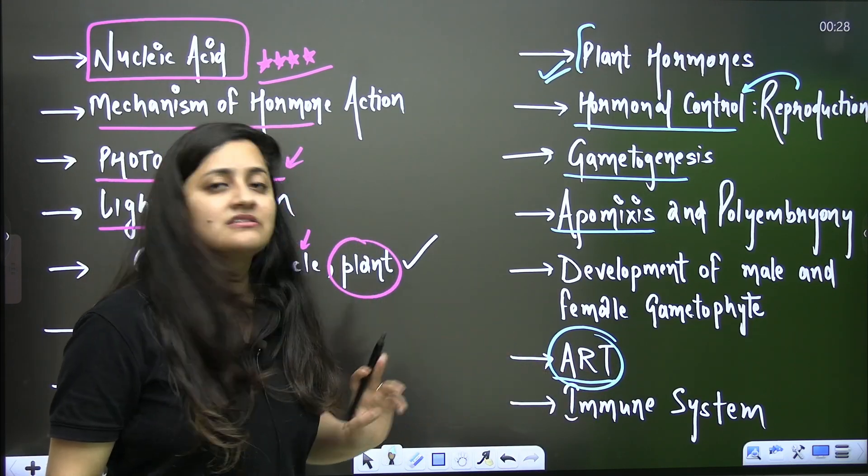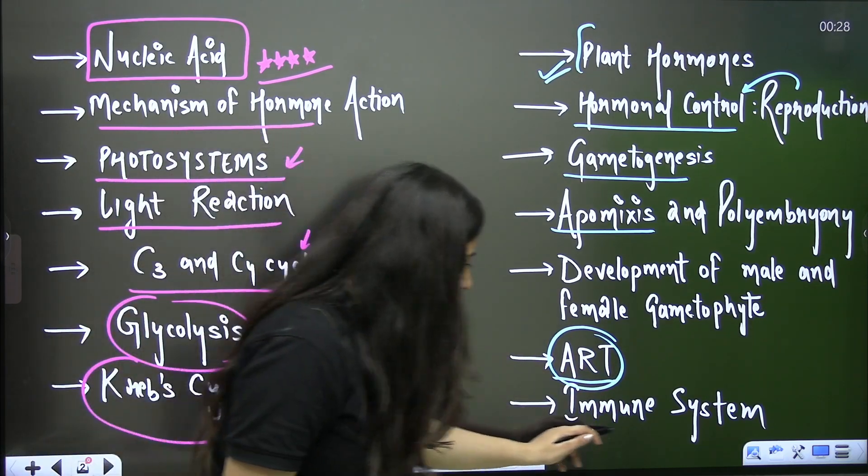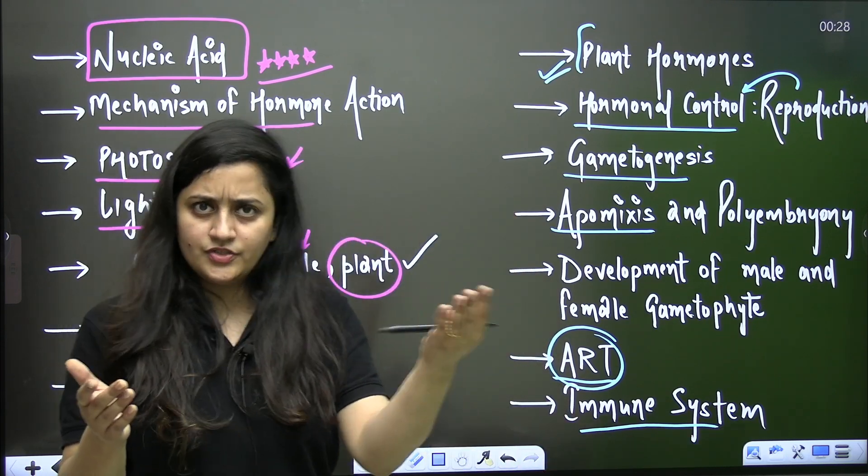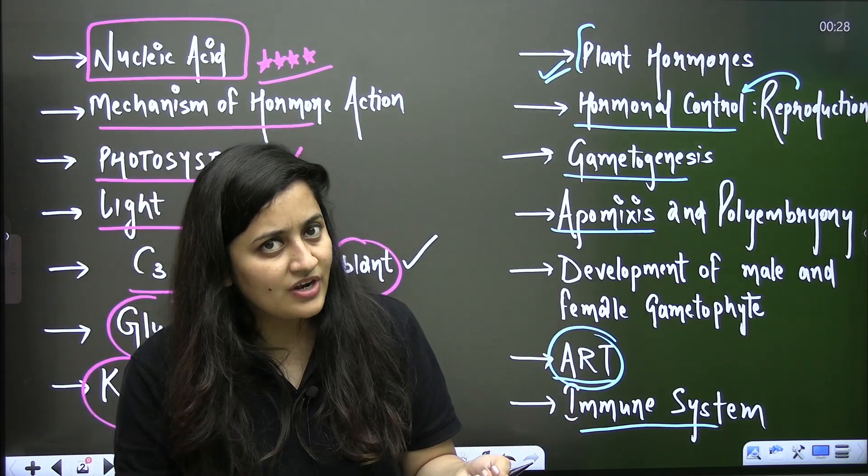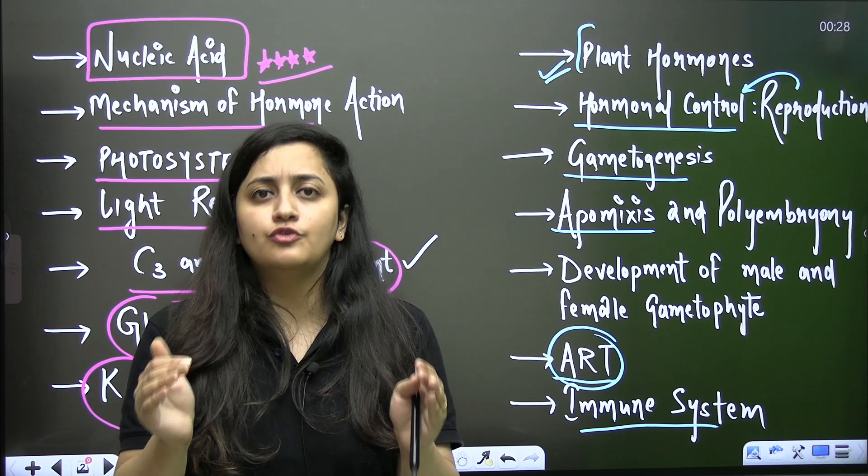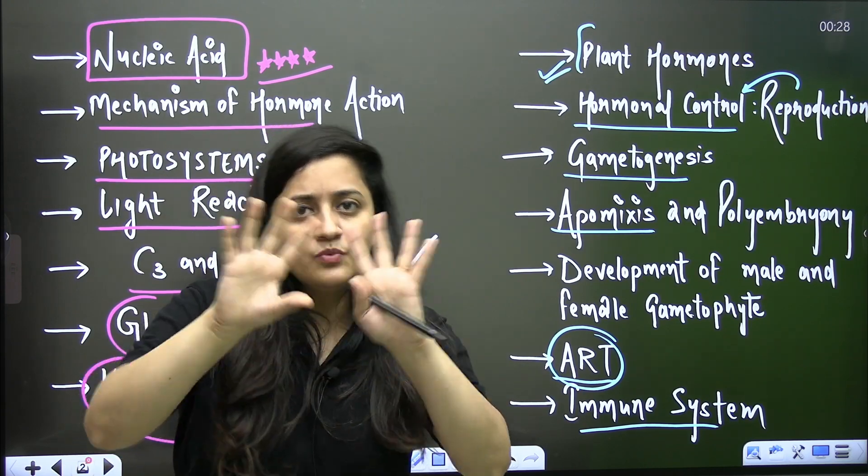Then comes the immune system. Here the comparison - CMI right, and your AMI. That's all. This is what you need to focus and the cells there, right? It will cover your two to three questions.